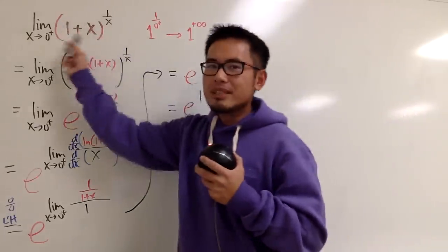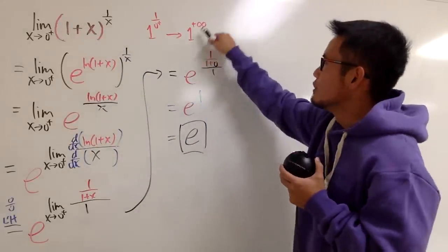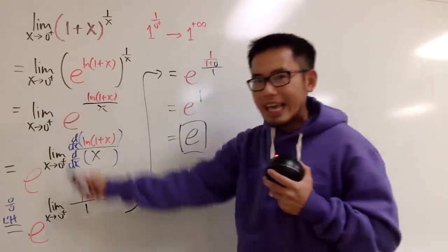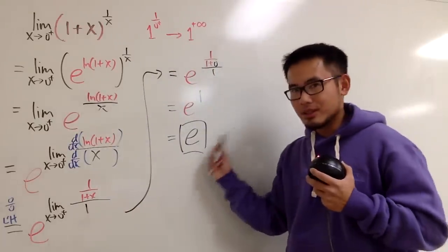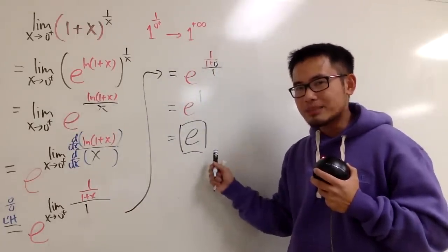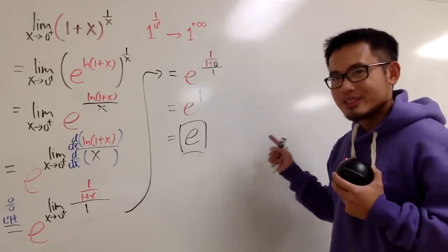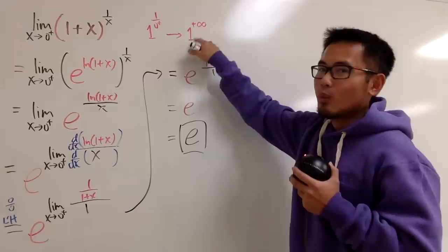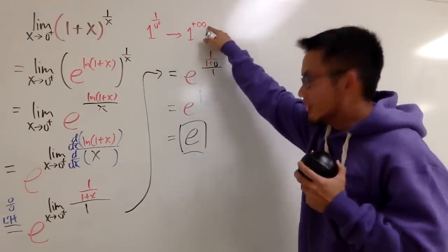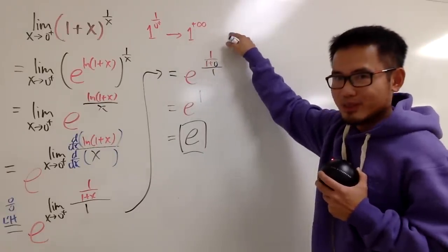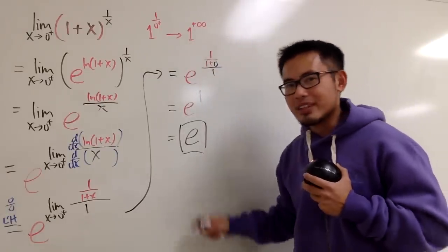Look! This limit, even though it was in the form of 1 to the infinity's power, but we end up getting e. And you know e is approximately 2.71828. It's 1828, right? So on, so on, so on. And you see now, 1 to the infinity's power, it doesn't have to approach to 1 every single time. It can approach to some other number as well.